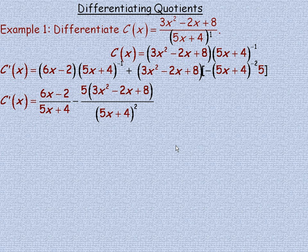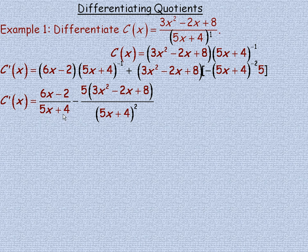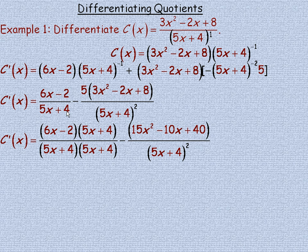Now we simplify the derivative. We have 6x minus 2 times 5x plus 4 to the power of negative 1, which means 5x plus 4 is written with a positive exponent in the denominator. Over here we have minus 5 times the function, and 5x plus 4 to the power of negative 2 is the same as 5x plus 4 squared in the denominator. Notice the denominators are similar but not the same — this has power 2 and this has power 1 — so we multiply the first term top and bottom by 5x plus 4 to get a common denominator.